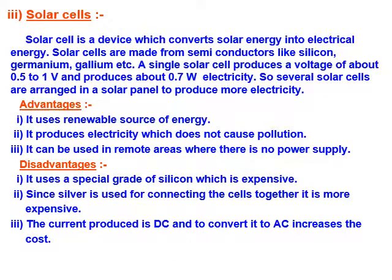A solar cell is a device which converts solar energy into electrical energy. Solar cells are made up of semiconductors like silicon, germanium, and gallium. A single solar cell produces a voltage of about 0.5 to 1 volt and produces about 0.7 watt of electricity. Several solar cells are arranged in a solar panel to produce more electricity.